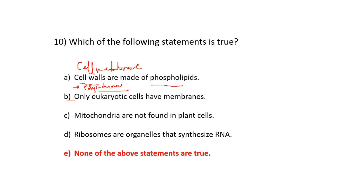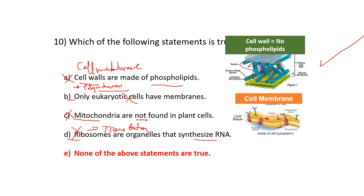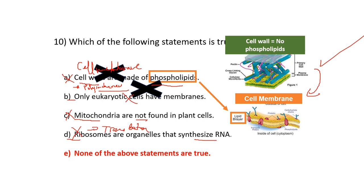Option B says only eukaryotes have cell membranes — this is a lie, prokaryotes also have cell membranes. Option C says mitochondria are not found in plant cells — also wrong, mitochondria are found in both plants and animals, because plants also do respiration in addition to photosynthesis. Option D says ribosomes synthesize RNA — wrong, ribosomes are responsible for translation. So the answer is E. Remember: cell walls have no phospholipid; that's the cell membrane.